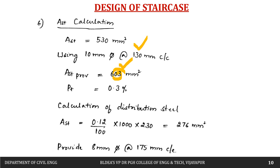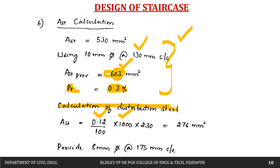The area of steel provided is 603 mm², giving a percentage of steel of 0.3%. For distribution steel, the minimum requirement is 0.12% × b × D = 276 mm². Assuming 8 mm diameter bars, the spacing works out to approximately 175 mm center to center.